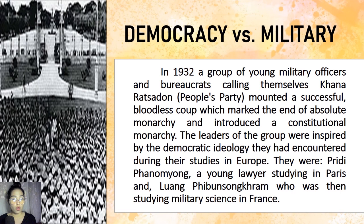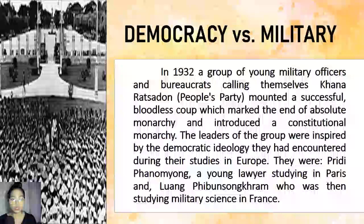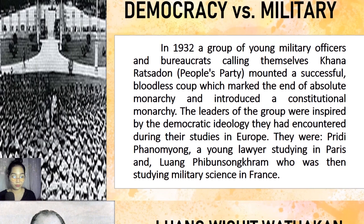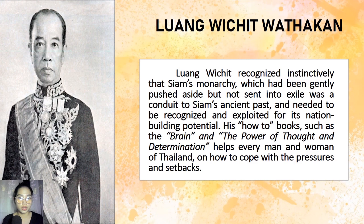This introduced a constitutional monarchy. The leaders of the group were inspired by democratic ideology they had encountered during their studies in Europe. These leaders were Pridi Phanomyong, a young lawyer studying in Paris, and Luang Phibunsongkhram, who was studying military science in France. The most important architect of nation building undertaken by the post-1932 leadership was Luang Wichit Wathakan.